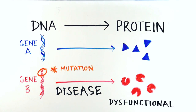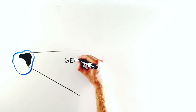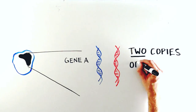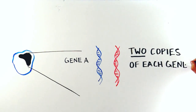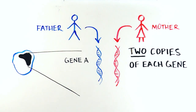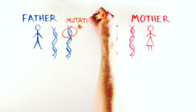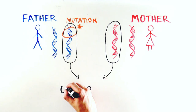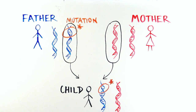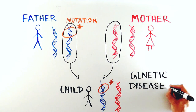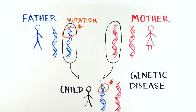In the nucleus of our cells, we have two copies of most DNA sequences. One of the copies comes from our father, and another one comes from our mother. So an affected parent can pass along a disease-causing mutation to their child. Diseases caused by DNA mutations that can be passed on from parent to child are called genetic diseases.